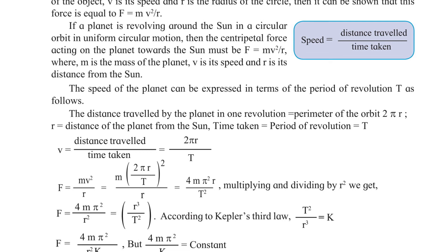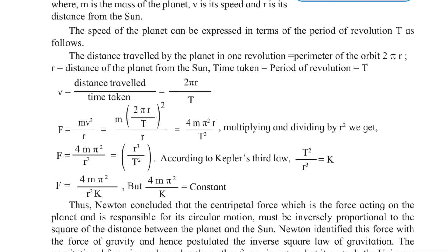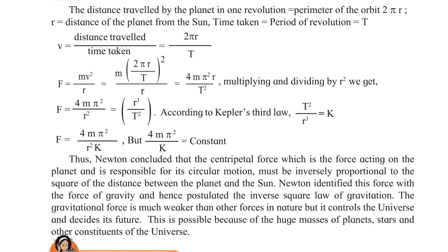Thus, Newton concluded that the centripetal force, which is the force acting on the planet and is responsible for its circular motion, must be inversely proportional to the square of distance. Hence he postulated the inverse square law of gravitation. The gravitational force is much weaker than other forces in nature, but it controls the universe and decides its future. This is possible because of the huge masses of planets, stars, and other constituents of the universe.